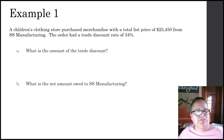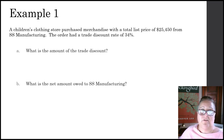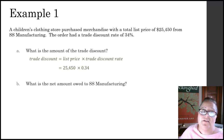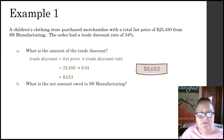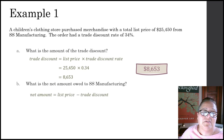Example one: A children's clothing store purchased merchandise with a total list price of $25,450 from SS Manufacturing. The order had a trade discount rate of 34%. What is the amount of the trade discount? To calculate the trade discount, we take the list price and multiply it by the trade discount rate: $25,450 times 0.34 equals $8,653. The amount of the trade discount is $8,653. To find the net amount owed to SS Manufacturing: $25,450 minus $8,653 equals $16,797.